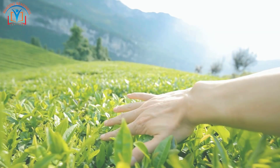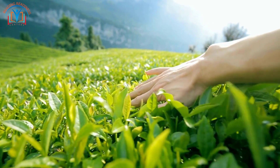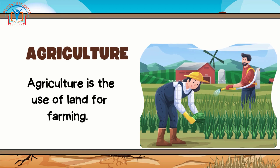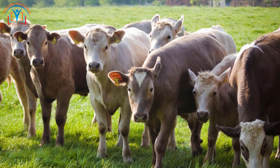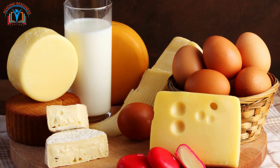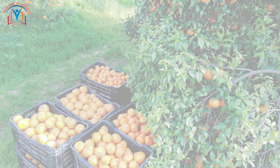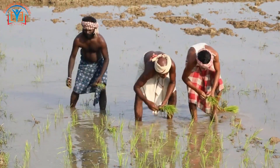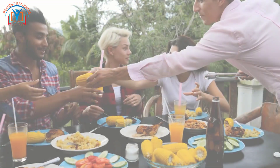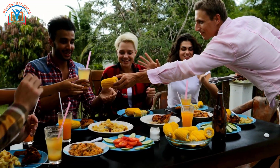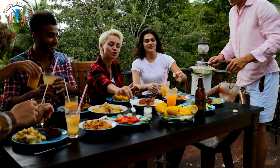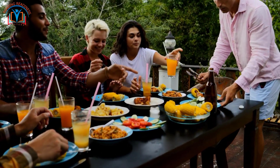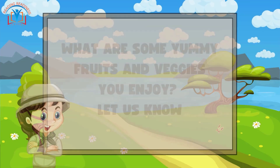Agriculture: changing gears, our journey takes us to vast farms. Agriculture is the use of land for farming. This can include growing crops, raising livestock, or producing dairy products. Imagine fields of crops, orchards filled with fruits, and farmers working hard to provide us with delicious food. Farms are like giant kitchens for the world, growing food that reaches our tables. It's amazing how nature and people work together to fill our plates with goodness!